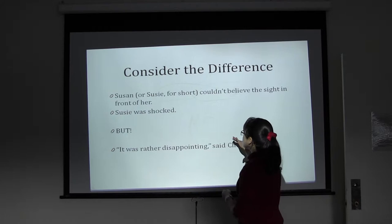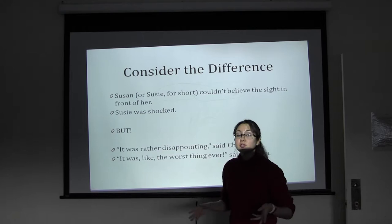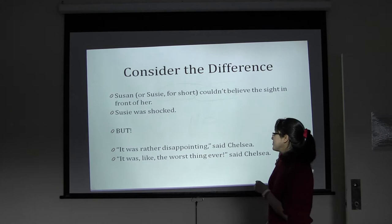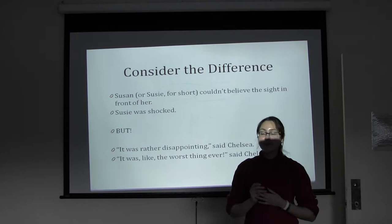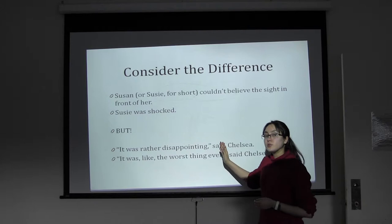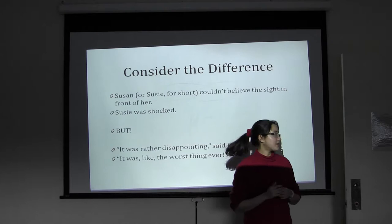On the other hand, if you take a sentence like 'It was rather disappointing, said Chelsea,' and you really want to explore Chelsea's personality, you could say something like 'It was like the worst thing ever, said Chelsea' — or even 'It was like the worst day of my life ever.' From that second version, we can probably assume Chelsea is a younger female, maybe a high school girl. Even though it's longer than the original, it's selecting the right words to convey Chelsea's ideas and personality.